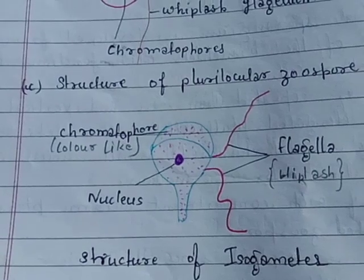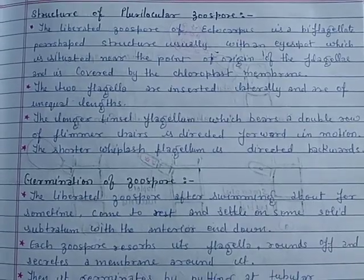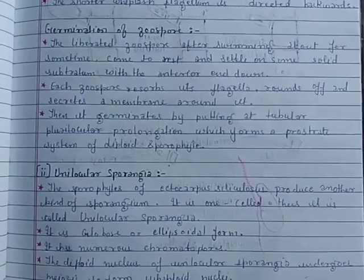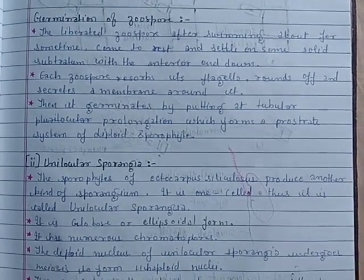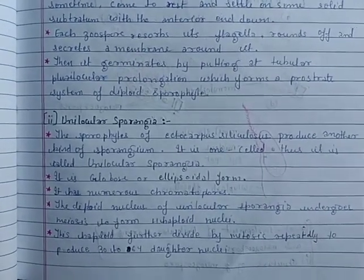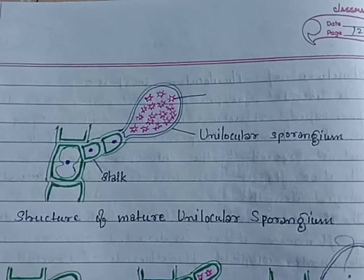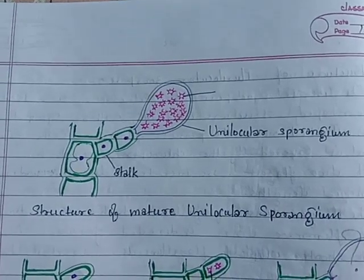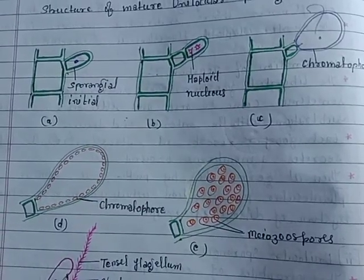Structure of isogametes. Structure of plurilocular zoospores. Germination of zoospores. Unilocular asporangia — including the structure of mature unilocular asporangium and development of unilocular asporangium.